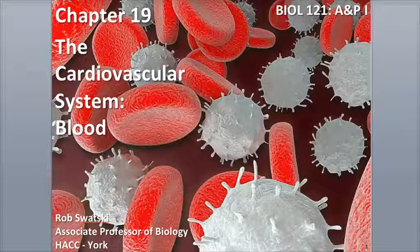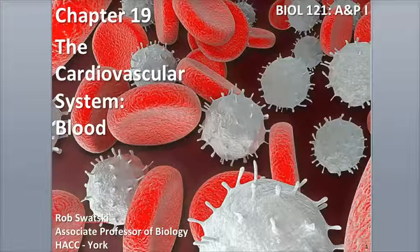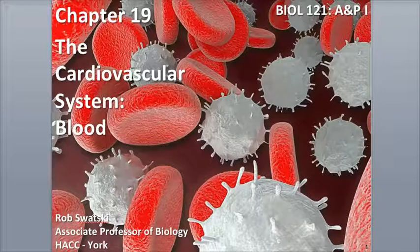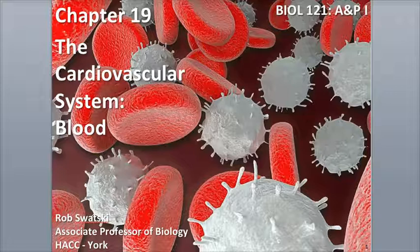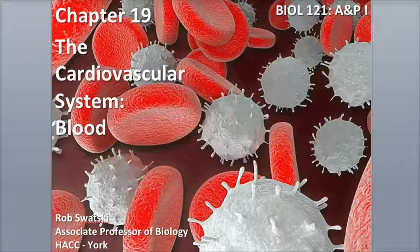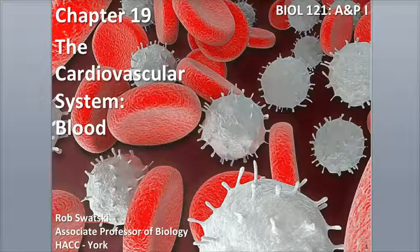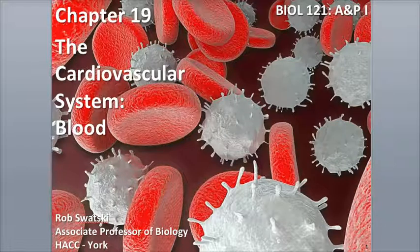The cardiovascular system is an organ system consisting of the blood, heart, and blood vessels, such as the arteries, veins, and capillaries. The term vascular is a reference to either the blood or blood vessels, while the prefix cardio means having to do with the heart. We will start our overview of the cardiovascular system with the blood, and then continue on with the heart and blood vessels in future podcasts.